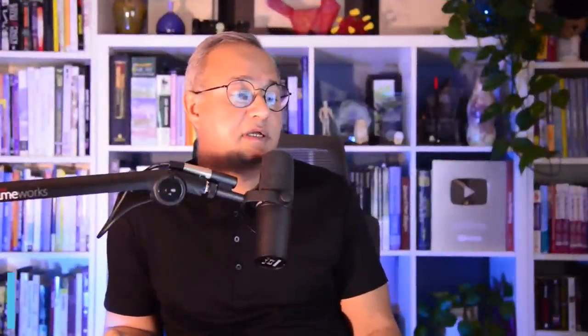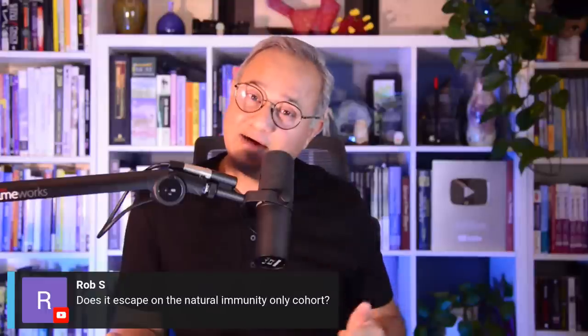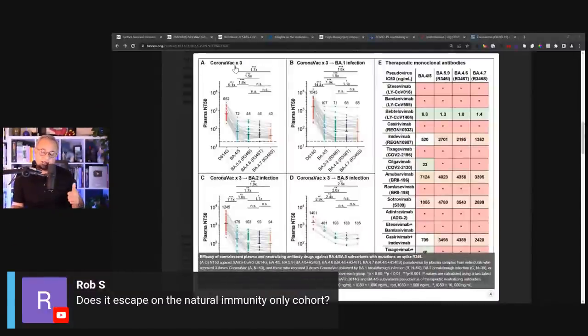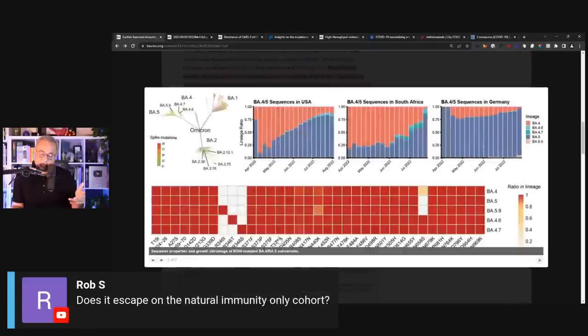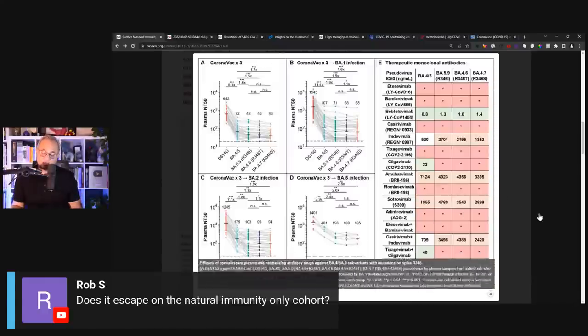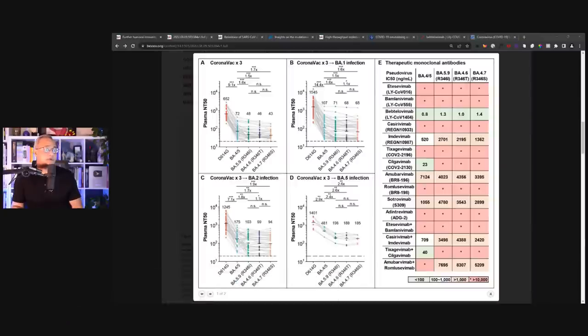There are some questions here. Rob says, does it escape in the natural immunity only cohort? They do not have that data. If you see here in this diagram, there is no natural immunity only cohort. If you see here, CoronaVac A, B is CoronaVac, C is CoronaVac, D is CoronaVac. Maybe number two have it. BA.5, these are the sequences. This is what they're showing that this is increasing in the U.S., in South Africa and then in Germany. I felt so bad for a second that I didn't look at the next picture and maybe they had it. No. So they don't have a natural infection. And that may also be because they may have less people not vaccinated in China. So no natural infection. Rob, sorry, at least I don't see that data.